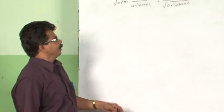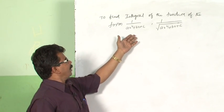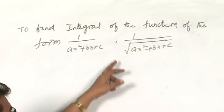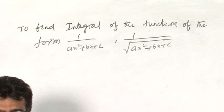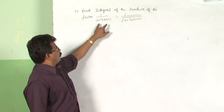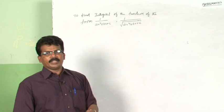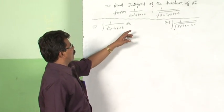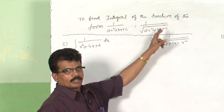Now we will see how to find integration of the function of this form — that means 1 by ax square plus bx plus c, where ax square plus bx plus c is a quadratic polynomial, or similarly 1 by root of ax square plus bx plus c. If a quadratic polynomial is given, try to factorize or transform this quadratic polynomial into known forms among the nine forms we have discussed, and then find the integration.